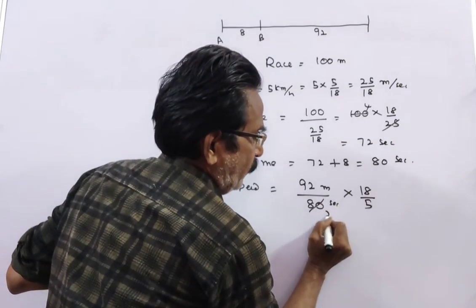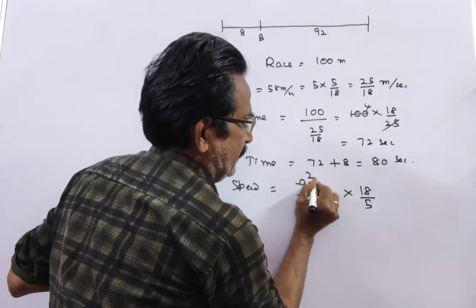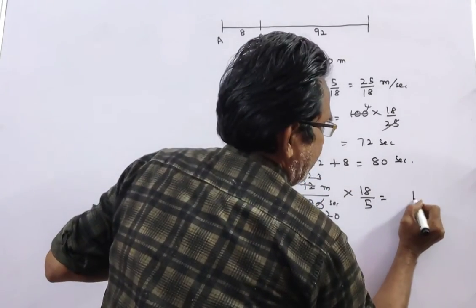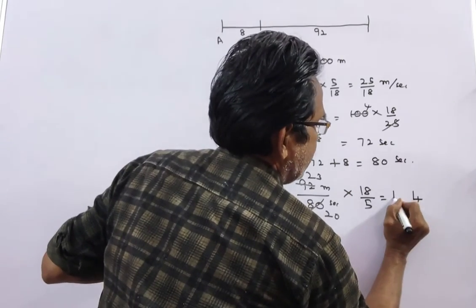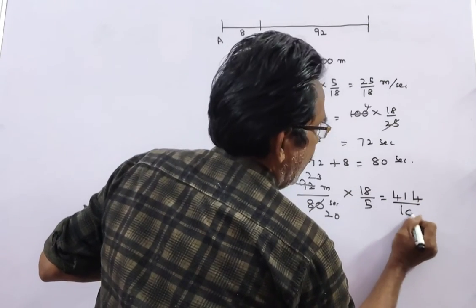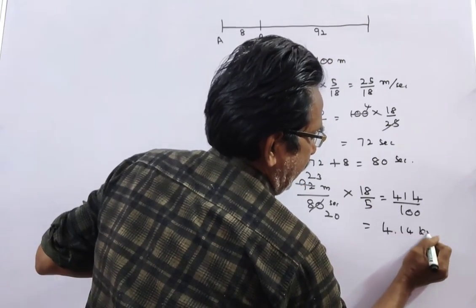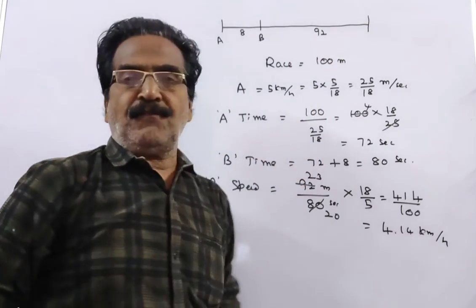5, 4, 4, 20s, 4, 23s. So 18 into 23. 18, 3s, 54. 18, 2s, 36, plus 5, 41 by 100. That is equal to 4.14 kmph, friends. 4.14 kmph.